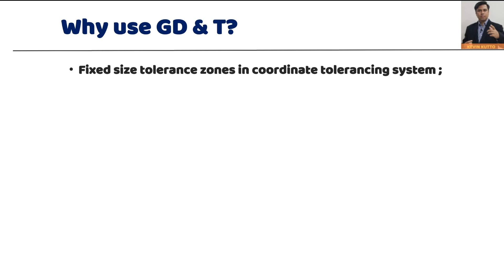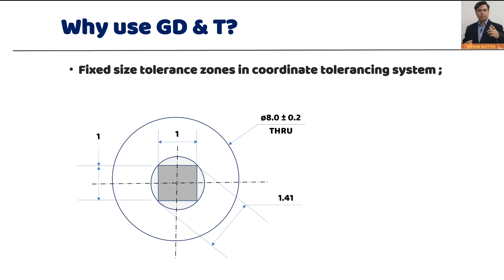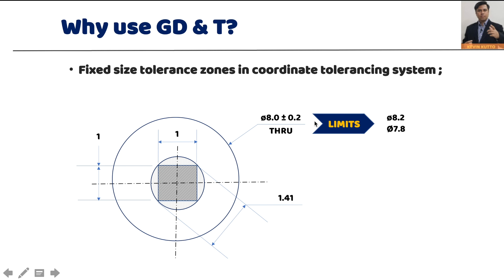The second disadvantage of the coordinate tolerancing system is the fixed size tolerance zone. For example, consider a hole of 8 ±0.2. The center of the hole has a square tolerance zone. The hole has two limits: 8.2 and 7.8. We know the worst case for assembly is when the hole is at its lower limit.